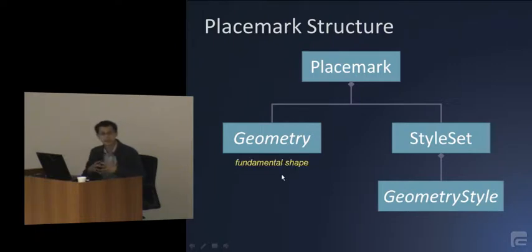So the geometry is the fundamental shape of the placemark. What I mean by fundamental shape is, the most common type are points. So a point saying, you are here, or let's meet up here, or this is the main entrance. So these are points. And at this point, you are just interested in where the thing is. You're not interested in what it looks like yet. What it looks like is specified instead in the geometry style.